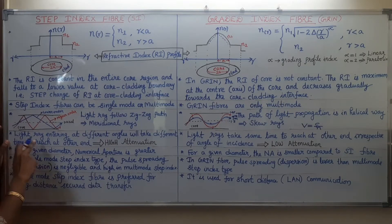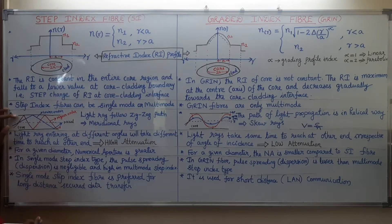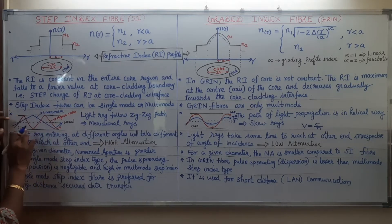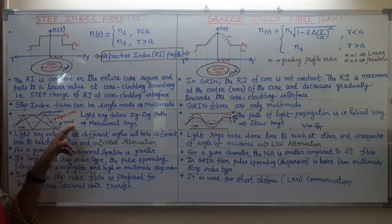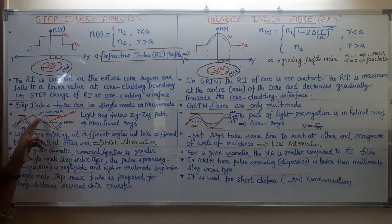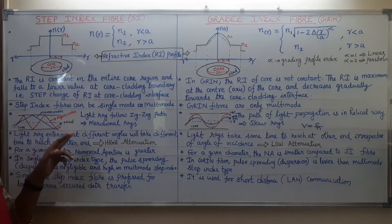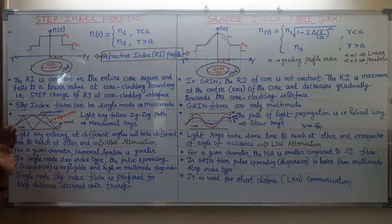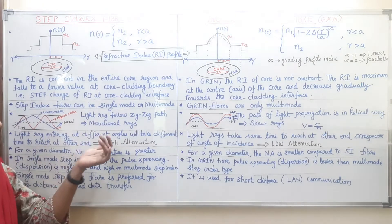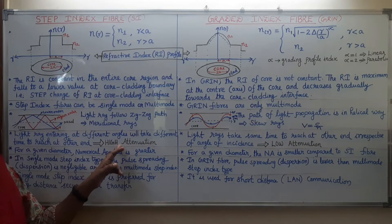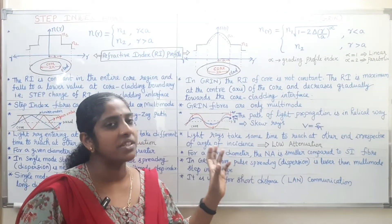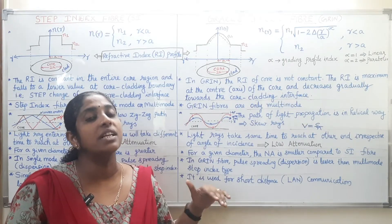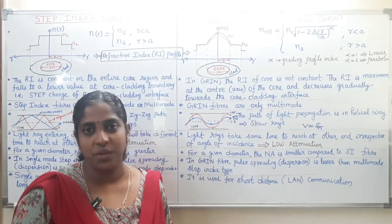In step index fiber, light rays entering at different angles take different times to reach the other end because total internal reflection happens only at the core-cladding boundary. Lower order modes follow a shorter path and arrive first, while higher order modes take a longer path and arrive late. This time delay between different light rays results in higher attenuation, whereas in graded index fiber all rays arrive simultaneously, so there is no time delay and the attenuation is low.